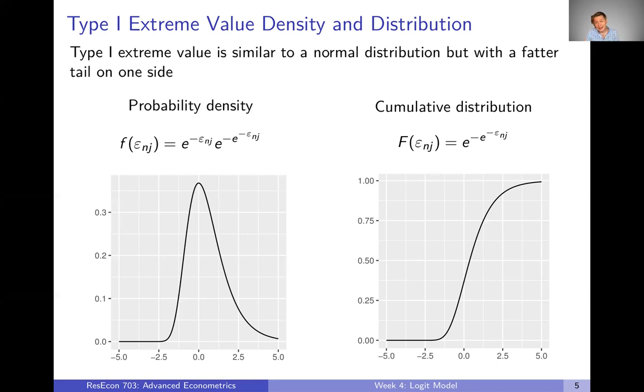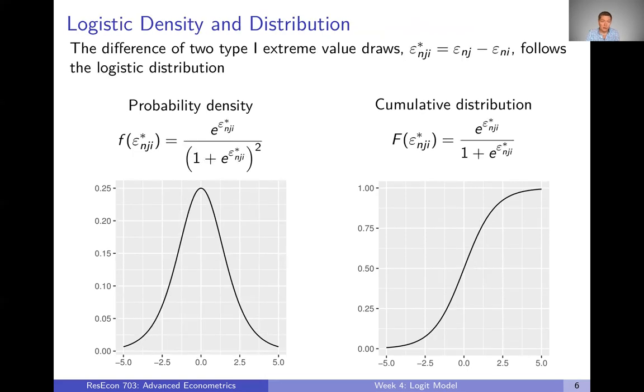But if you remember back to last week, or even that expression for choice probabilities a couple slides ago, at the end of the day we don't really care about any one draw of epsilon. We care about differences between epsilons, differences between random draws. And so if we were to take two random draws that are both type one extreme value but independent, and take the difference between them, let's call that epsilon star.